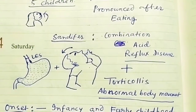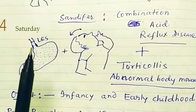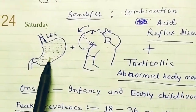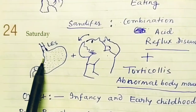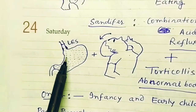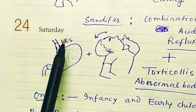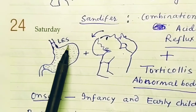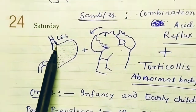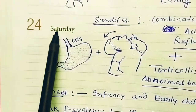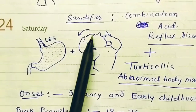Looking at the diagram, the first picture shows GERD. In GERD (gastroesophageal reflux disorder), the acid in the stomach rises upward because the lower esophageal sphincter is not properly functional — it is loose and weakened. Because this sphincter is not working, acid moves upward into the esophagus. This is GERD.